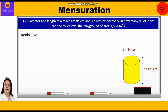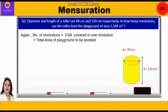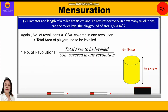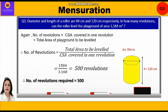Number of revolutions × curved surface area per revolution = total area of playground. Therefore, number of revolutions = total area ÷ CSA per revolution = 1584 ÷ 3.168 = 500 revolutions. So 500 revolutions are required to level the playground.